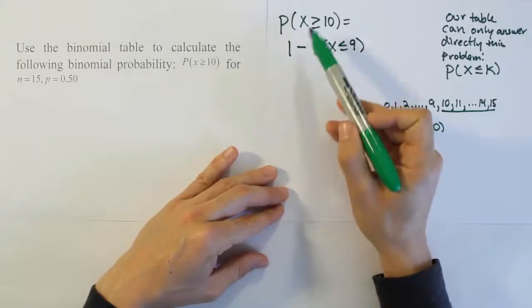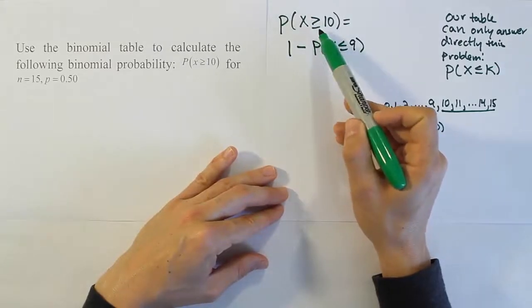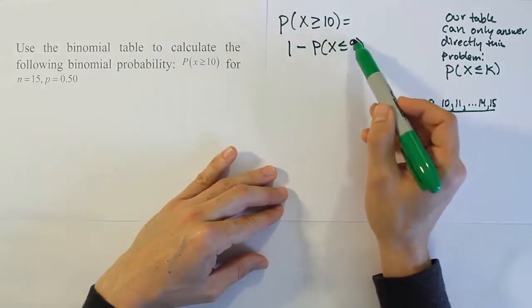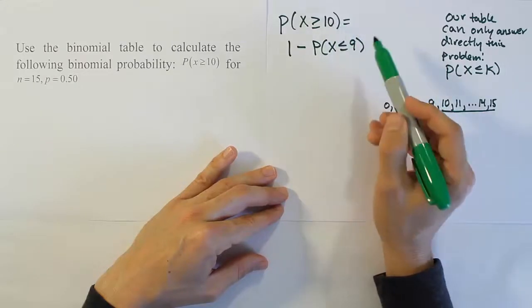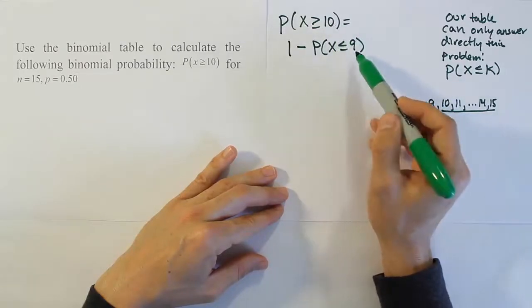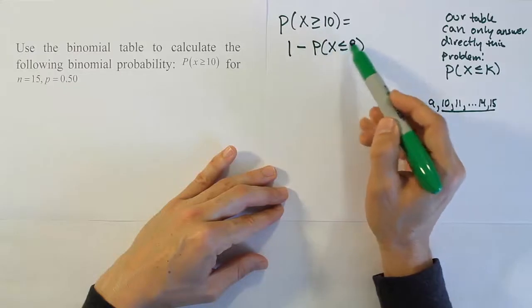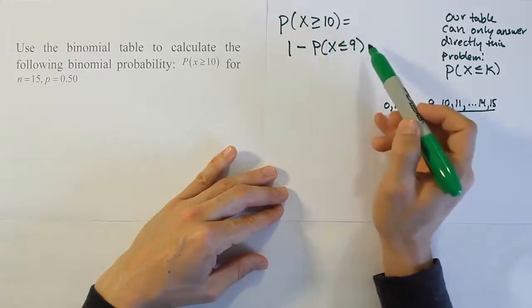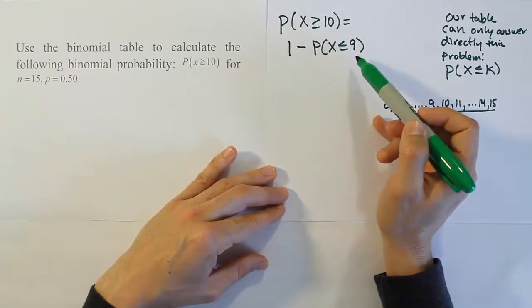And if you look at the pattern here, so basically when the problem says greater than or equal to, you do 1 minus the probability x is less than or equal to that number minus 1. And that's how you solve it, basically. That's the pattern.